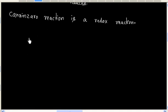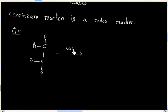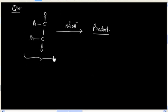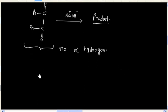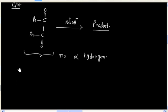Now let us consider this reaction. So we have this molecule and this is reacting with NaOH. What will be the product in this reaction? Once again, this compound has no alpha hydrogen. So in this case, we will have Cannizzaro reaction.